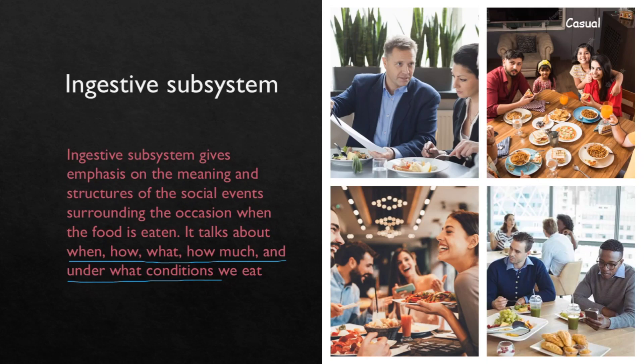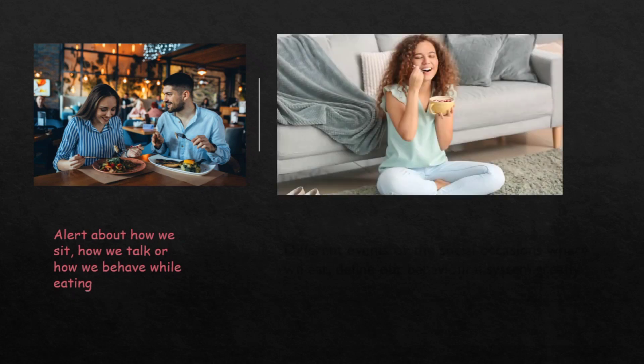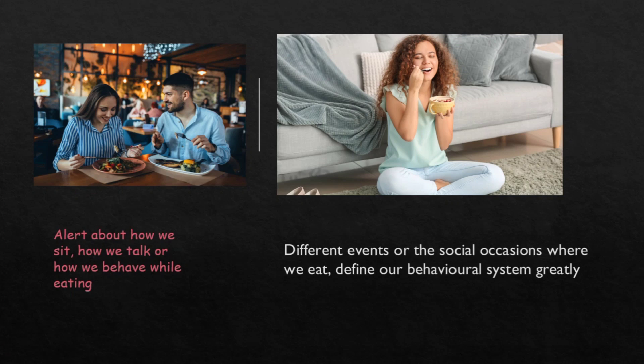With seniors we may feel embarrassed and eat less; with friends we eat more freely; in a restaurant we are alert about how we sit and behave. At home we don't care much. The key point is that different social occasions where we eat greatly define our behavioral system.